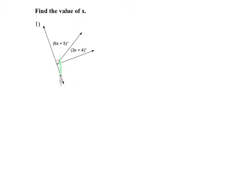So in this one, I know that they are adjacent angles, because they are next to each other. But we know that this right here is the right angle. So that means that they are also complementary angles. So that means that 6x plus 5 plus 3x plus 4 equals 90, because they are complementary angles.